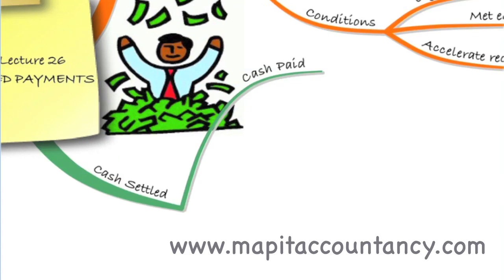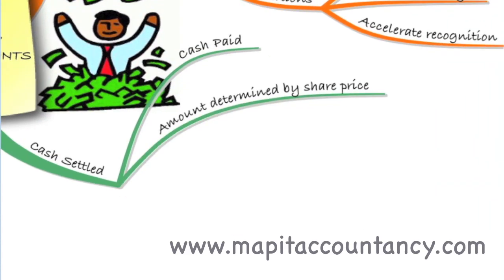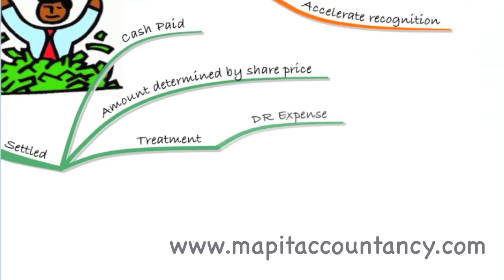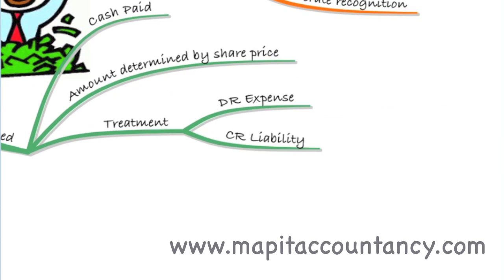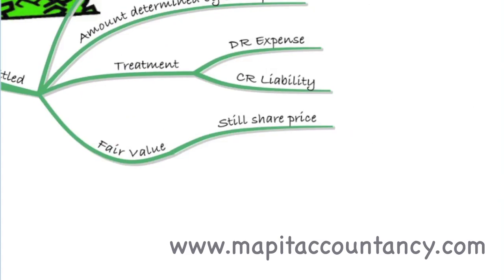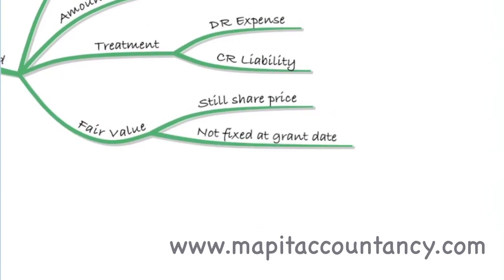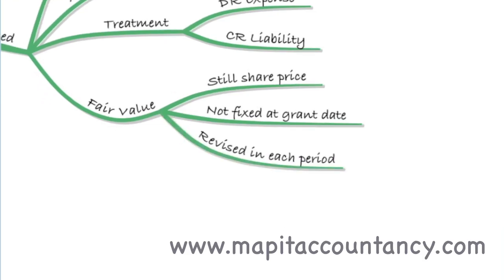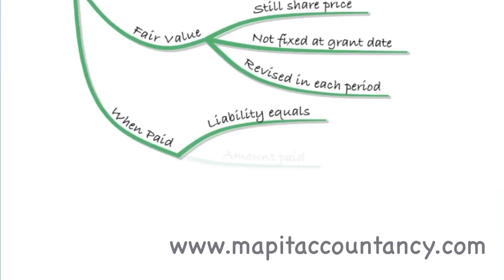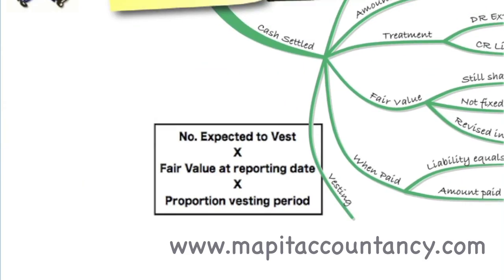Cash settled — this is cash paid at an amount determined by the share price. So if the share price goes up, you're going to pay more cash. The treatment this time was to debit the expense and credit a liability, so that at the end of the vesting period your liability equals the amount you were going to pay. The fair value this time is still based on the share price, but it's not fixed at the grant date — we revise it in each period. When it's paid, the liability will equal the amount that's paid. So for cash settled, the vesting calculation is again the number expected to vest, times the fair value at the reporting date. At each reporting date we take the fair value of the share price, unlike equity settled where it was the fair value at the grant date throughout. Everything else is the same, except we take the fair value at each reporting date.